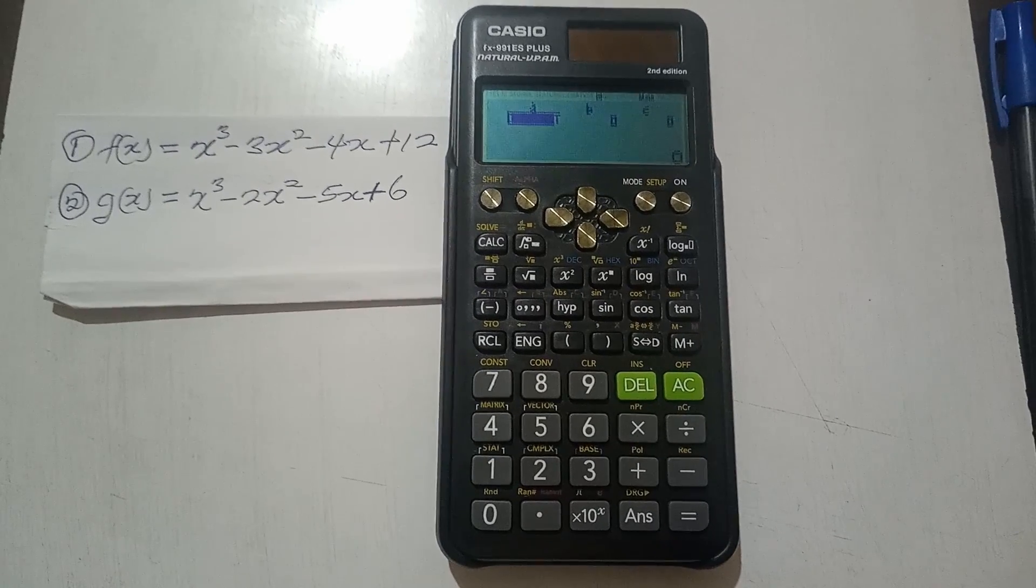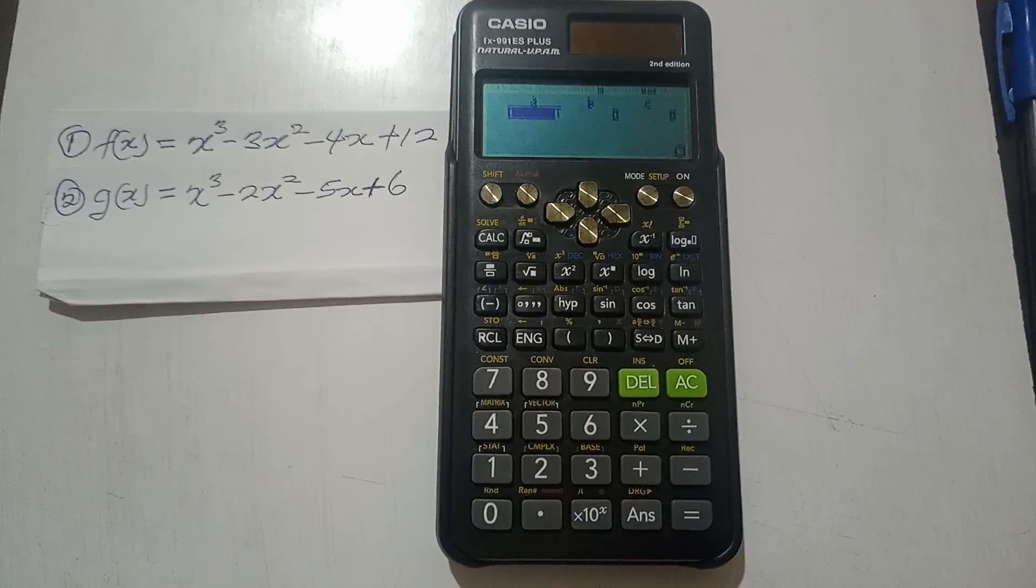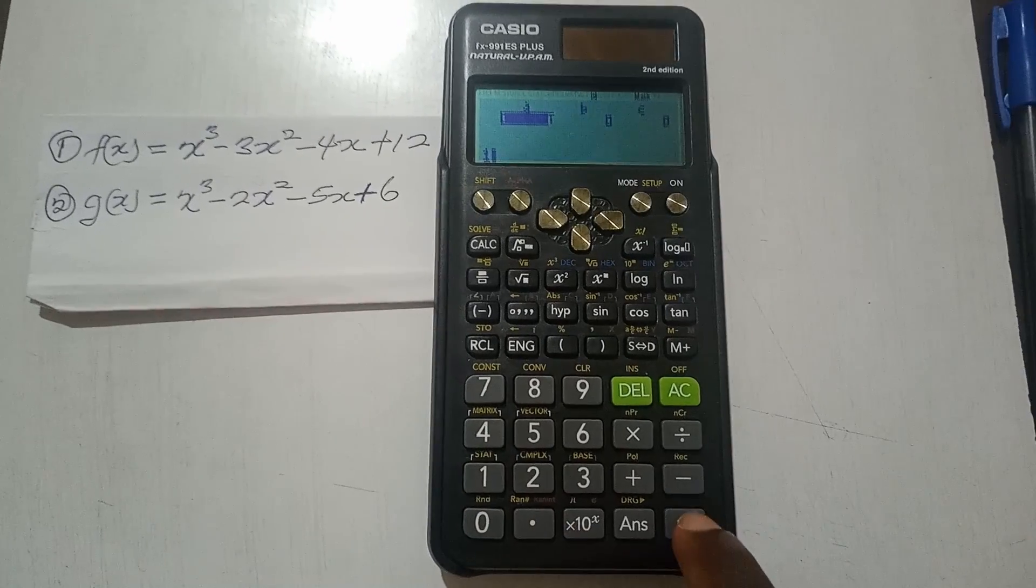So for example, for the x³, the coefficient is a, and in this case is 1. So you enter 1 and you press equal to.